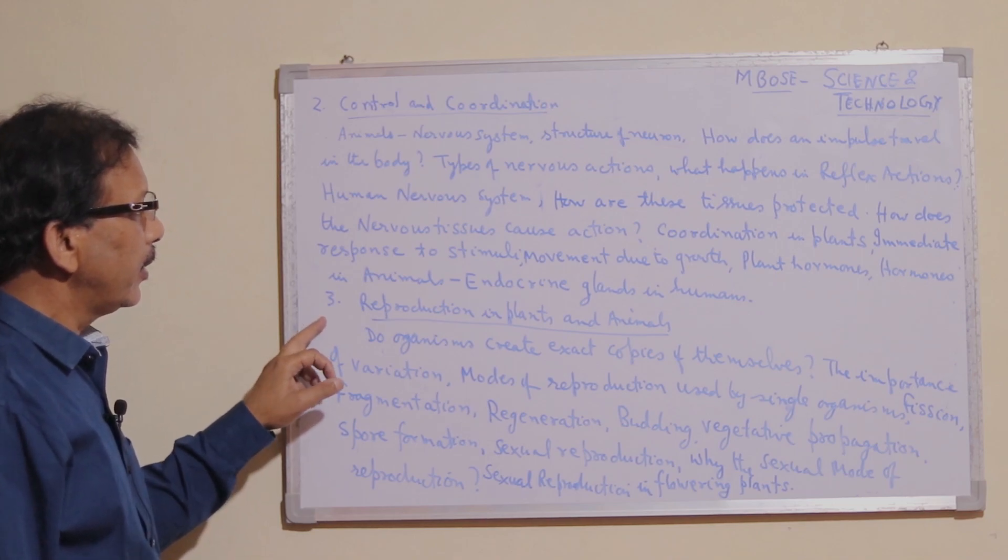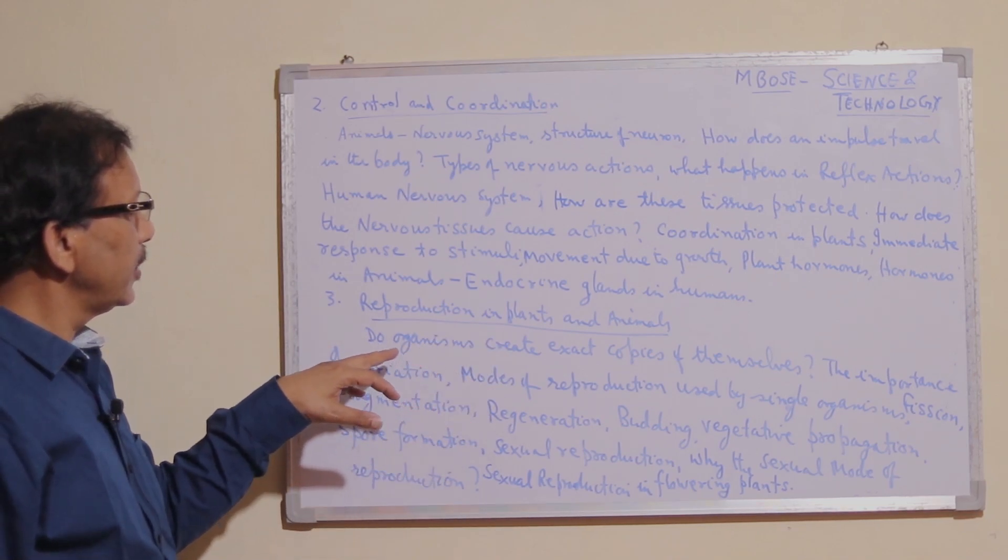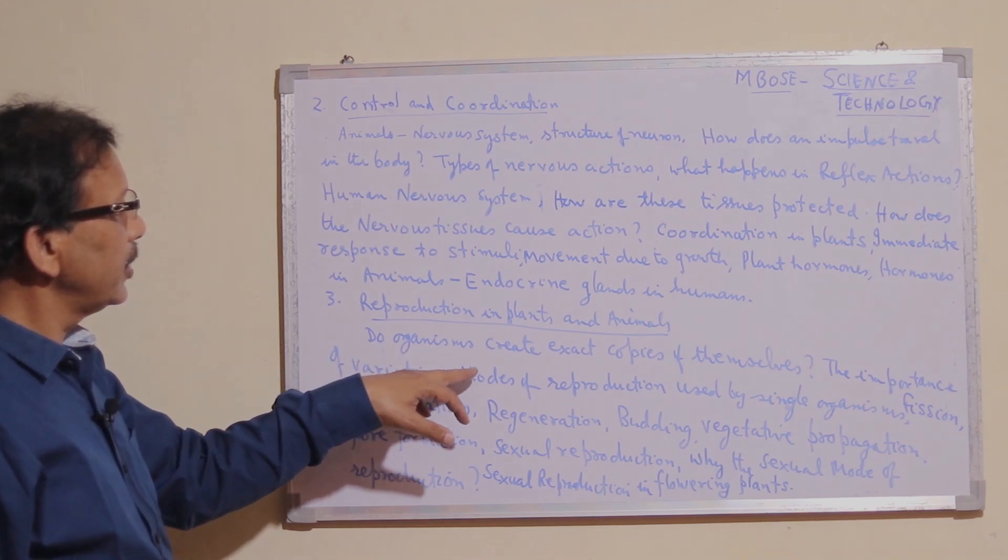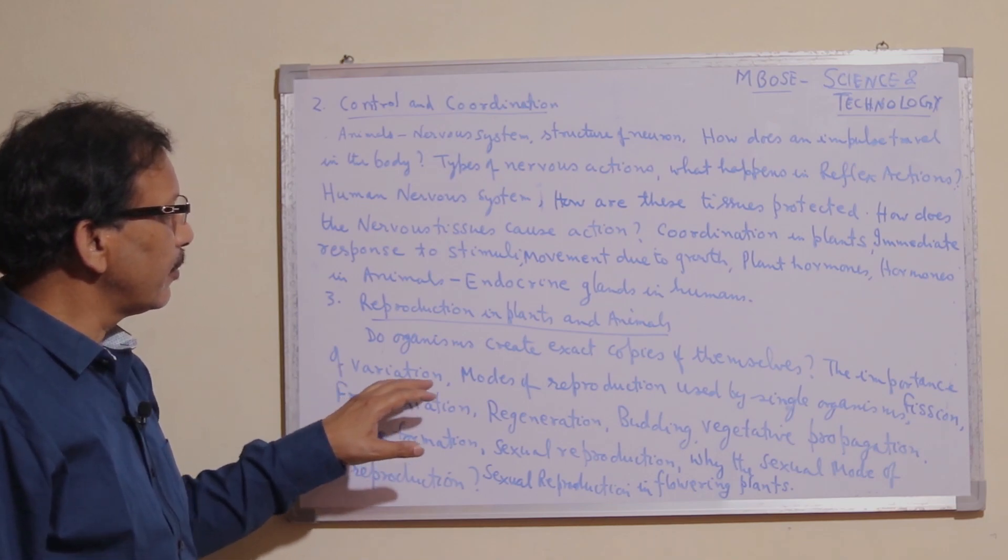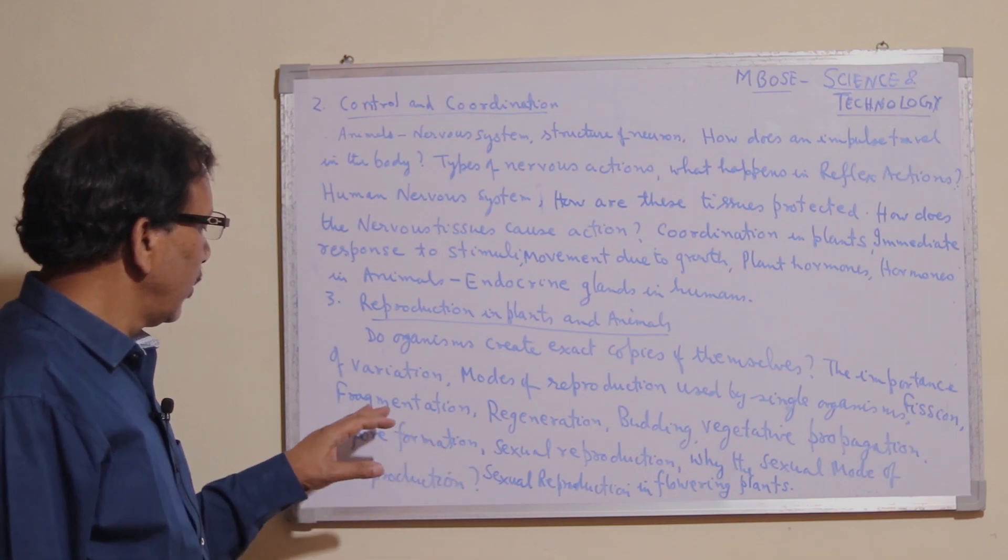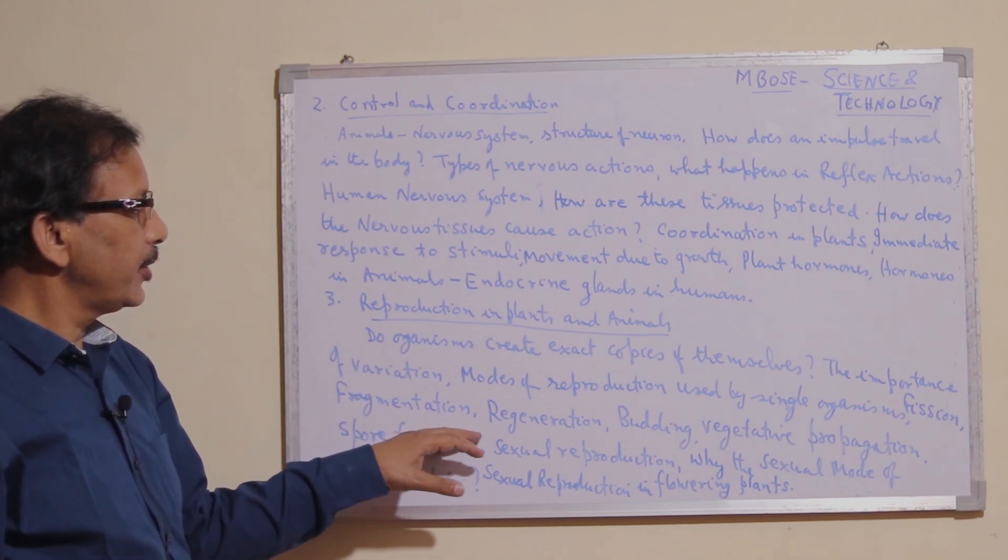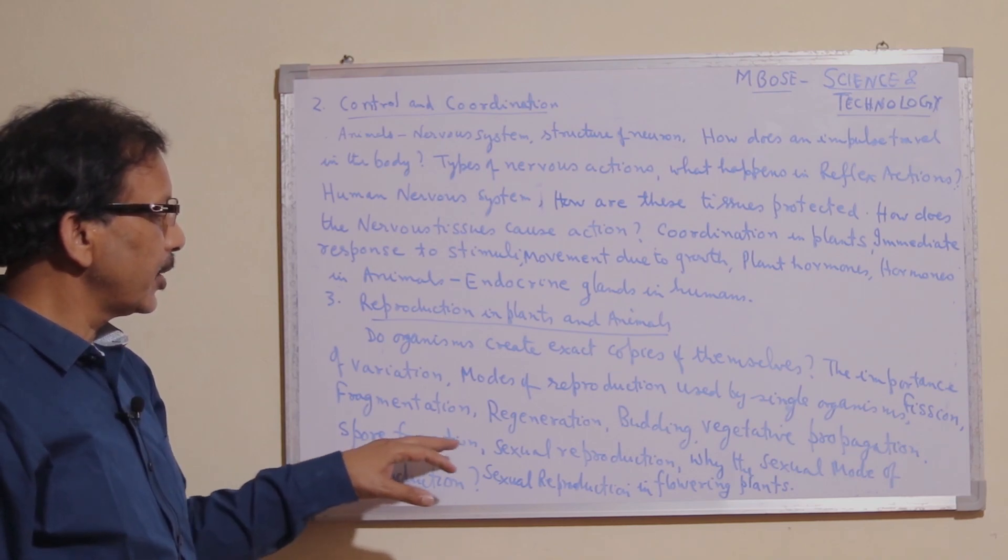Chapter 3 is reproduction in plants and animals. We study do organisms create exact copies of themselves, importance of variations, modes of reproduction used by single organisms, fission, fragmentation, regeneration, budding, vegetative propagation, spore formation, and sexual reproduction.